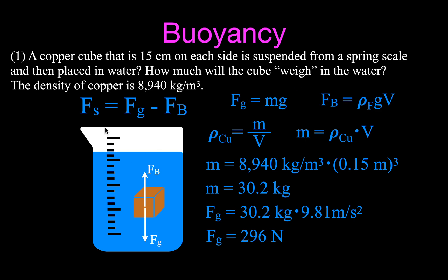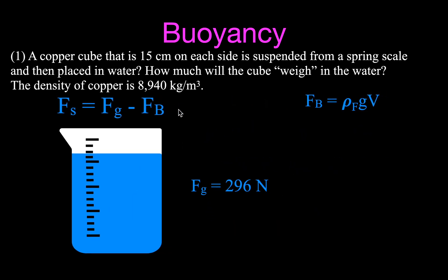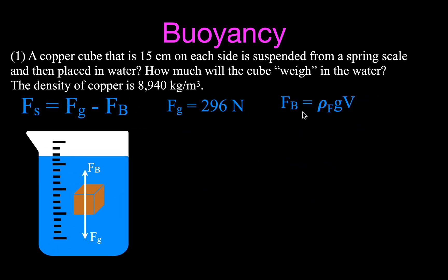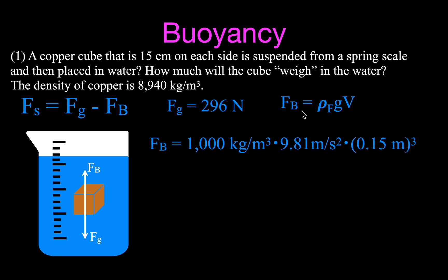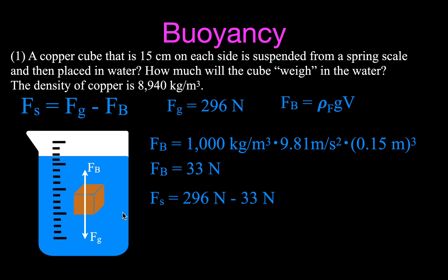That is the weight we need. Now for the buoyant force, we use: density of water (1,000 kg/m³) times g times the volume (0.15 m cubed), and we get a buoyant force of 33 newtons. The force on the spring scale is the weight minus the buoyant force, so the apparent weight of that copper cube in water is 263 newtons. That is the end of example number one.